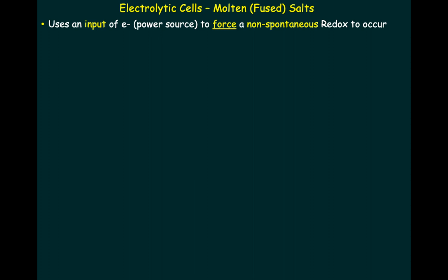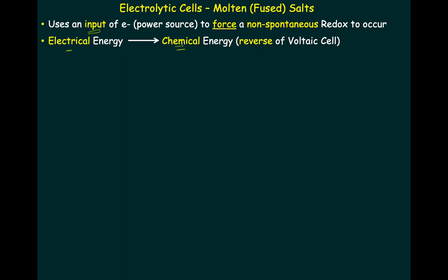Basically, we're going to use an input of some type of power source — an input of electrons externally from the outside — to force a non-spontaneous reaction to occur. You can think of this as being endothermic, but we're using power from the outside. This power source could be a battery, it could be electricity from the wall, from a power source. So basically, electrical energy from the outside is going to be used to create chemical energy, and this is going to be the reverse of the voltaic cell.